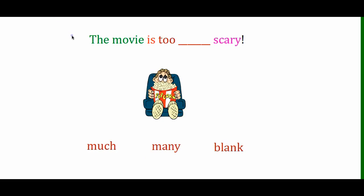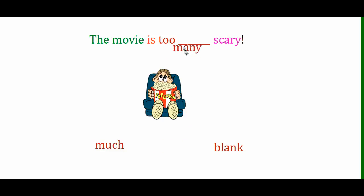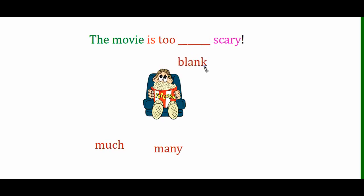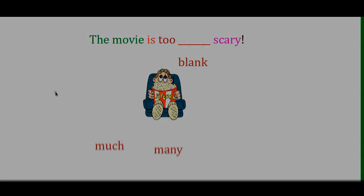Next: 'The movie is too blank scary.' Straight away you can see 'scary' is an adjective, so 'much' and 'many' can't go there — the space stays blank. 'The movie is too scary.' That's the full evaluation. So that's everything for evaluations. If you would like to try the activity below, thank you and goodbye.